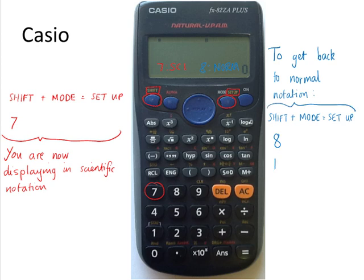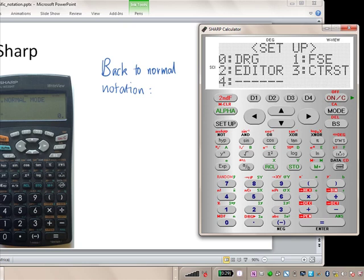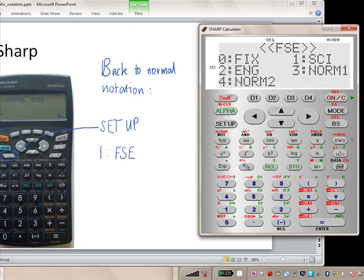If you have a Sharp calculator, then probably the way to get back to normal notation is to again press Setup, and then press 1 again to choose FSE. And you can see the third option within that is 3, norm 1. So choose normal 1.